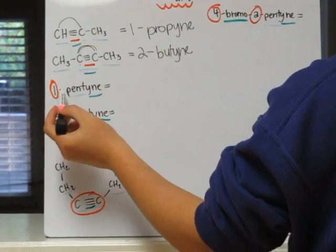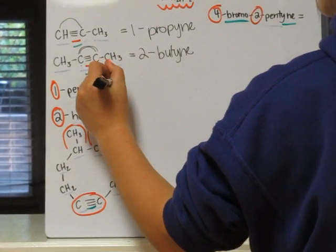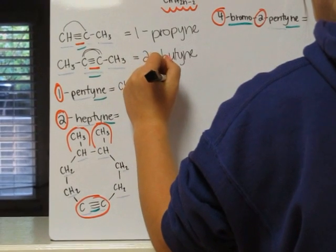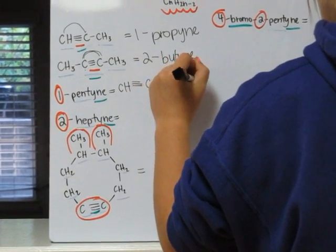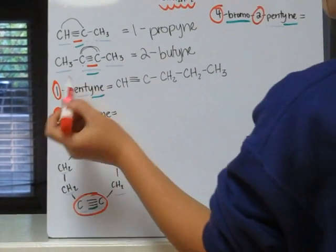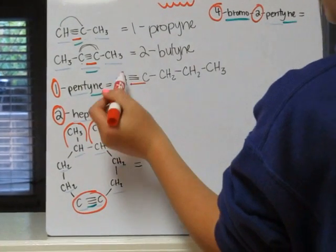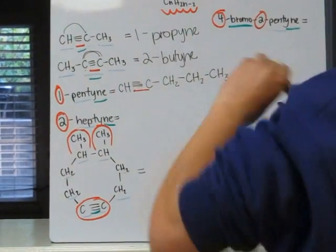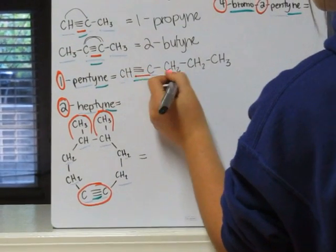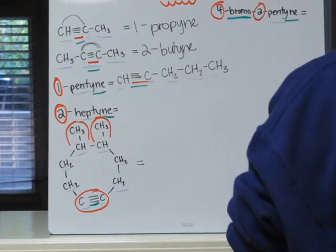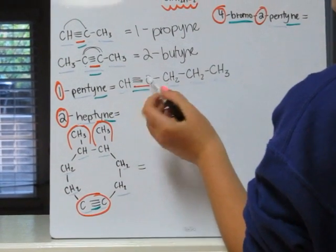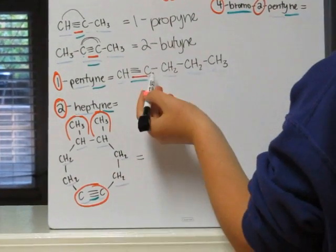So now we're going to draw one pentyne, which would look like this. So we've got one pentyne. Our red goes here to represent that the bond goes from the first carbon to the second carbon. The triple bond also gives us our yne ending. And then we have one, two, three, four, five carbons for pent. Now you may be wondering why there's no H on this carbon — because we have three bonds on this side and one bond on this side, this carbon is saturated, meaning it has the maximum number of bonds that it can have, so it doesn't need a hydrogen.